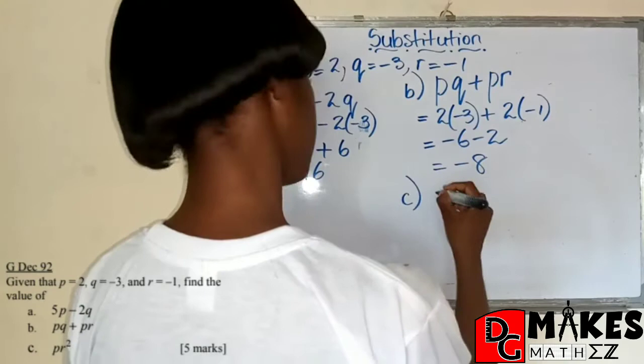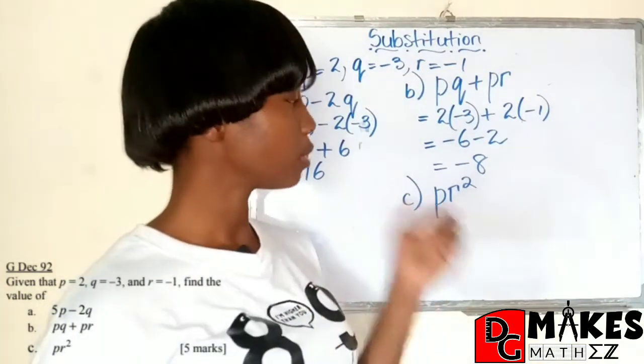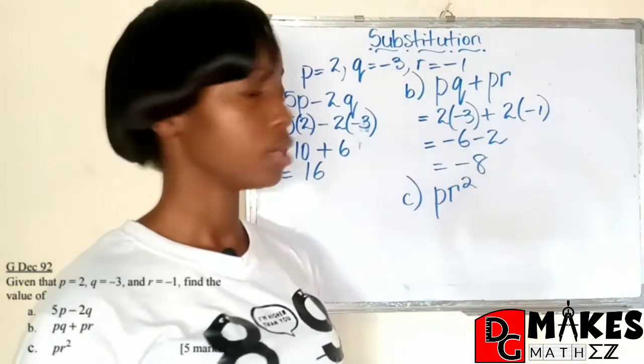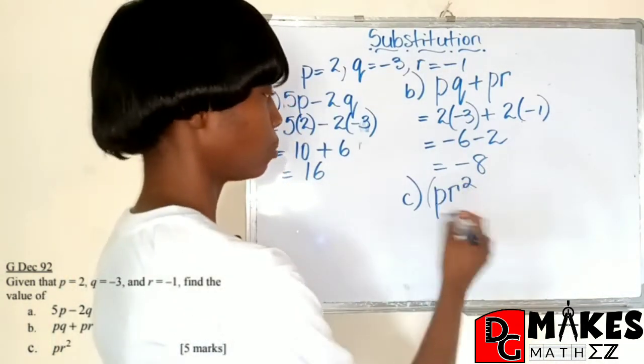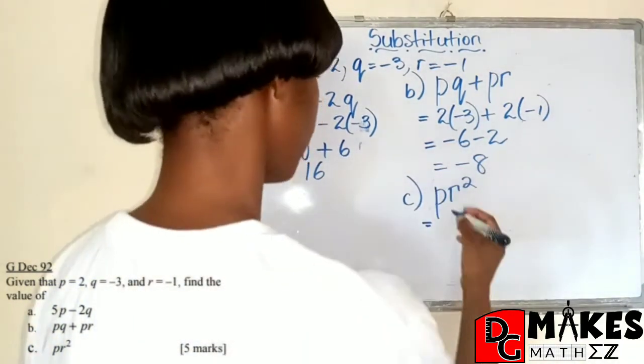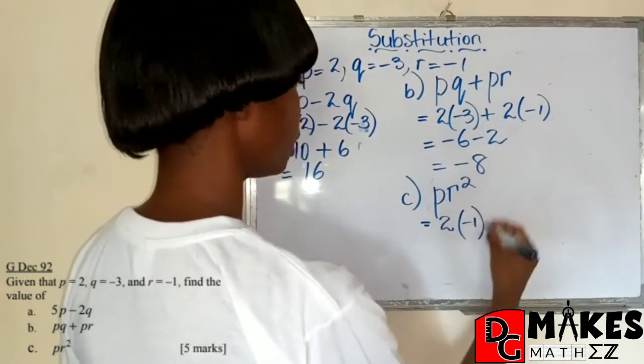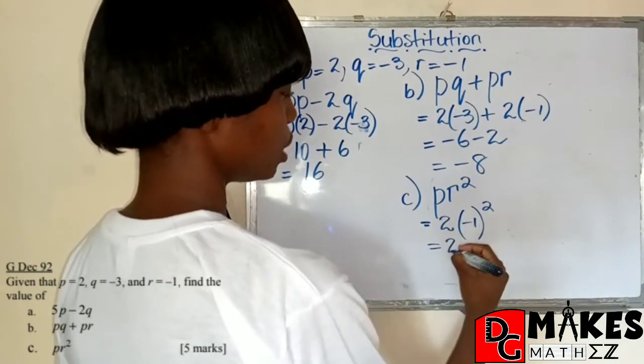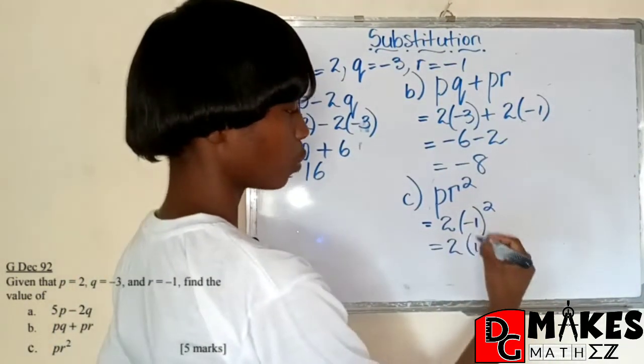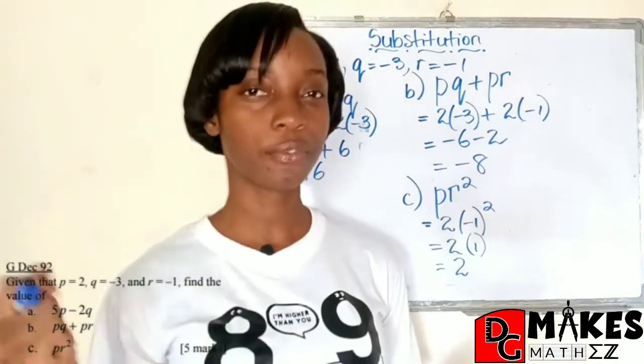Part C says we need to find the value of PR squared. Here, one of the things that students usually misinterpret is that only the R is being squared here. If it is that they wanted you to square P as well, PR would have been in a bracket. And so let us be mindful that only R is being squared. So the value of P is 2 times R is negative 1. So this would be 2 times, when we square a negative, we'll always get positive. And so negative 1 squared will give us 1. And so that final answer would be 2.